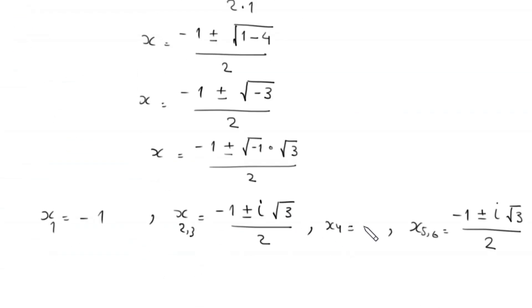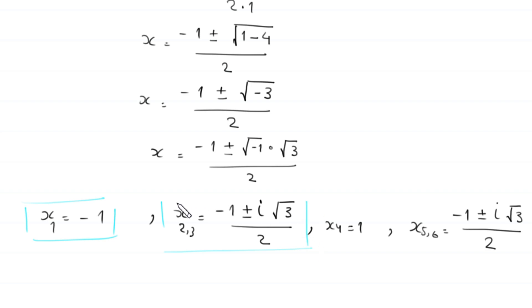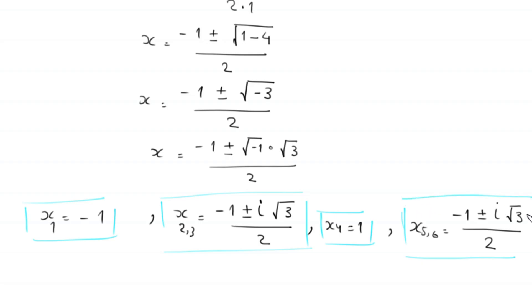So we have six solutions in total: x₁ is equal to negative 1, x₂ and x₃ are equal to negative 1 plus or minus i times root 3 over 2, x₄ is equal to 1, and x₅ and x₆ are equal to negative 1 plus or minus i times root 3 over 2.